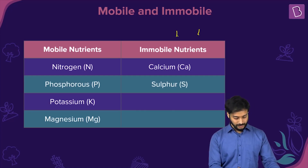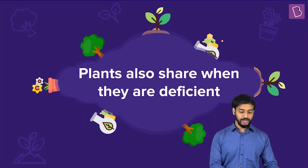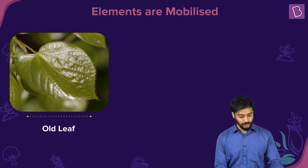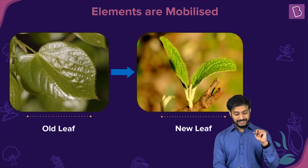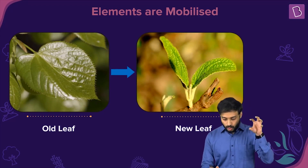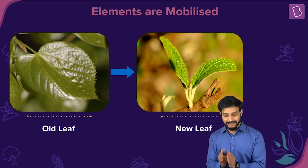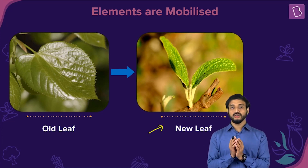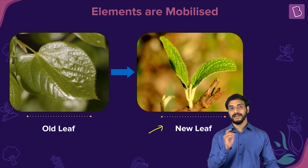Think of it like this: when there's food left and you're hungry, your parents will offer it to you. Something similar happens in plants — plants also share when they are deficient. Nutrients from the older leaves are broken down and transported to the younger leaves, because the younger leaves need to grow.